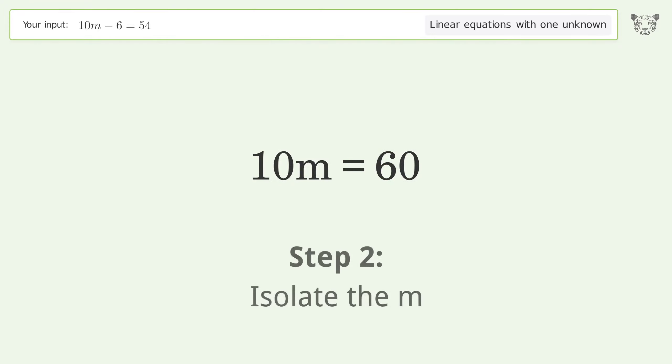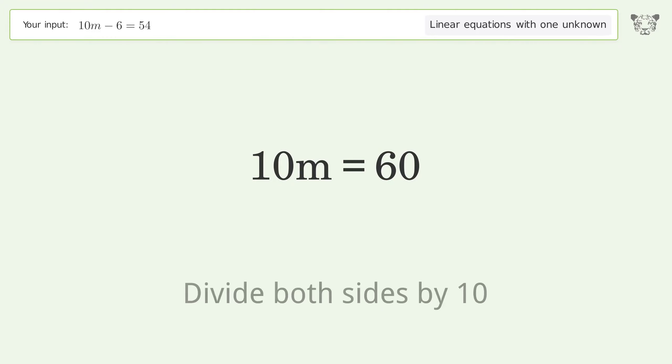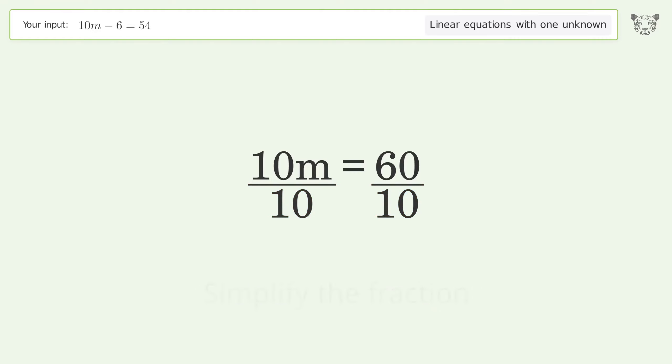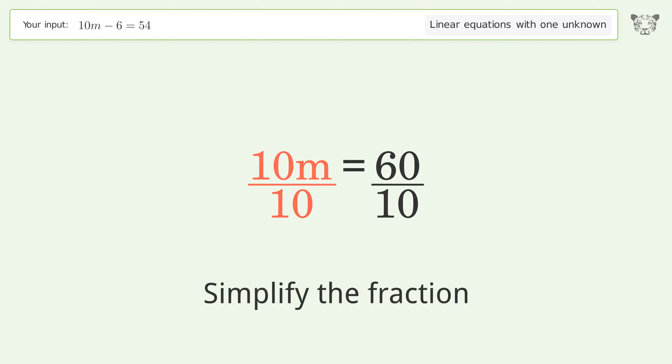Isolate m by dividing both sides by 10, then simplify the fraction.